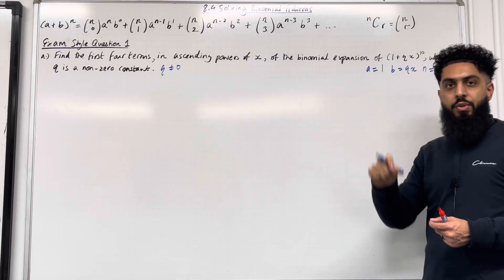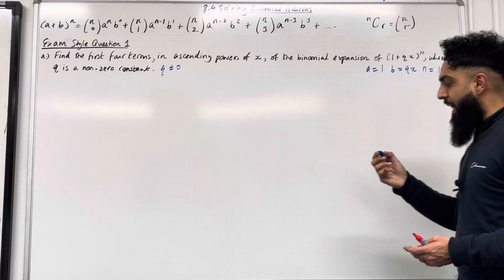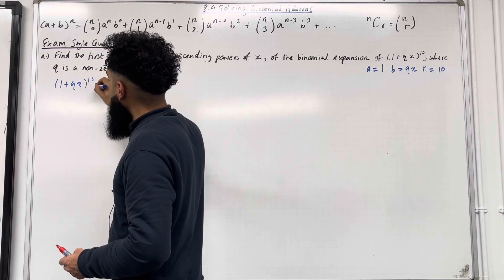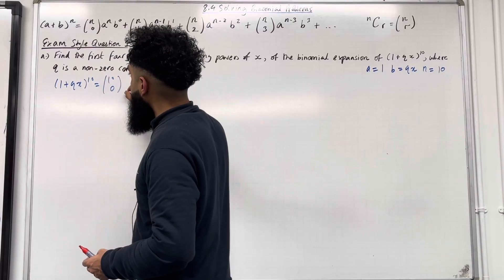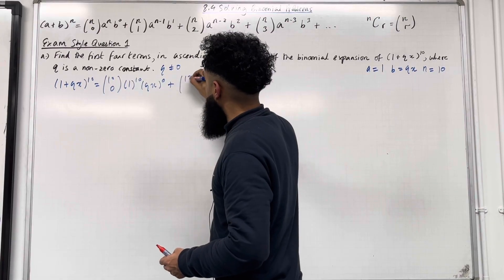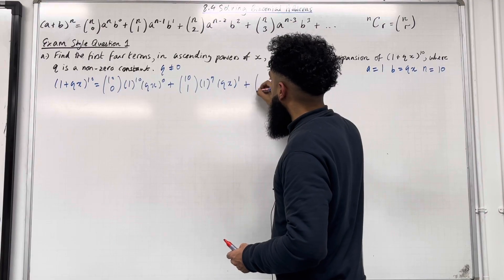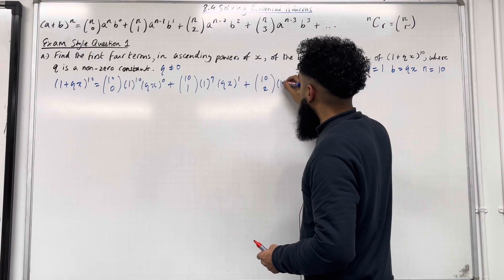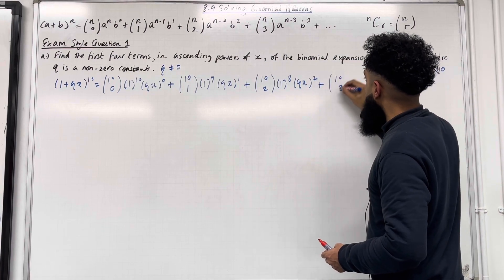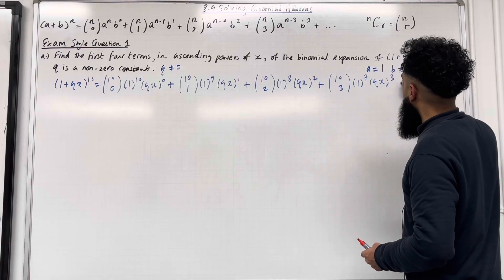Now we're going to substitute a, b, and n into the binomial expansion formula. The expansion of (1 + qx) to the power 10 is given by: 10C0 · 1^10 · (qx)^0, plus 10C1 · 1^9 · (qx)^1, plus 10C2 · 1^8 · (qx)^2, plus 10C3 · 1^7 · (qx)^3, dot dot dot. These are your first four terms.